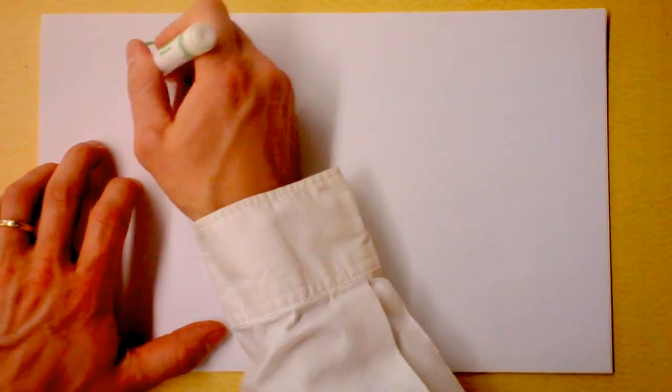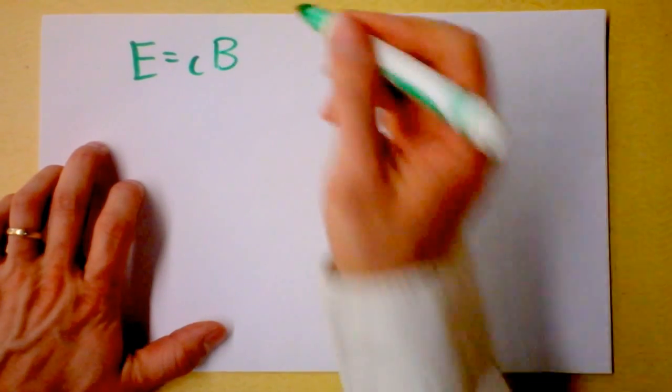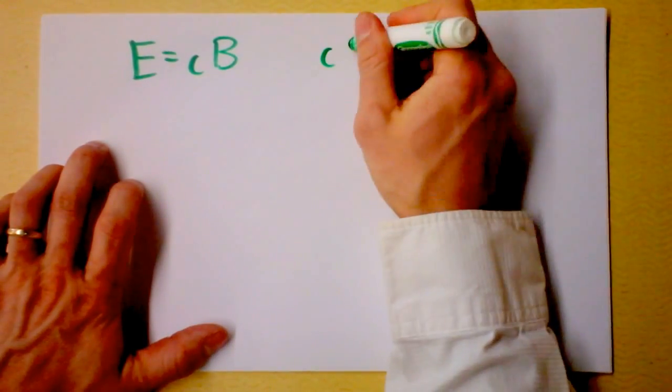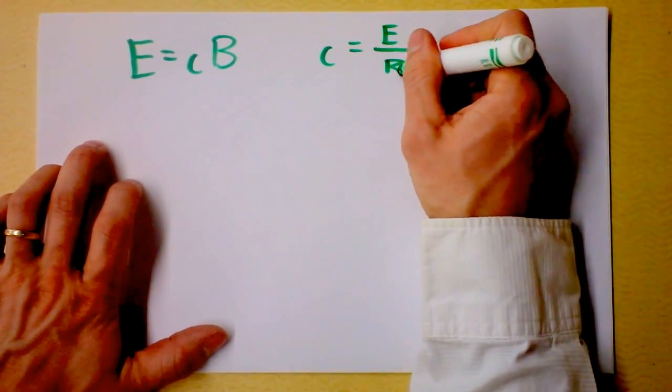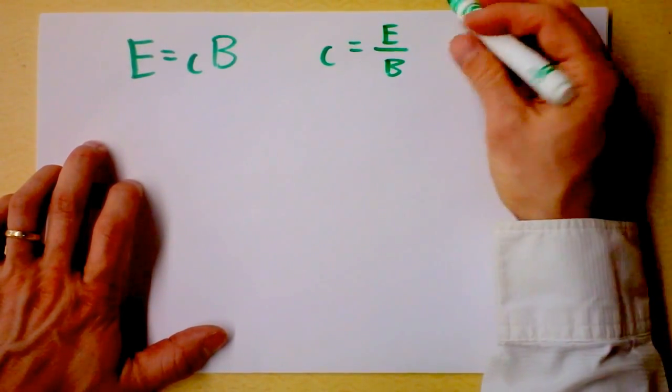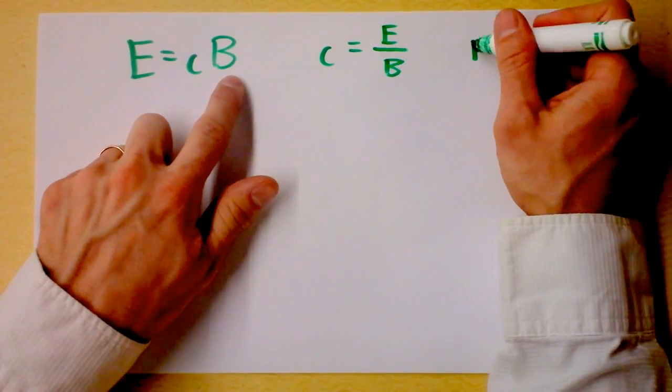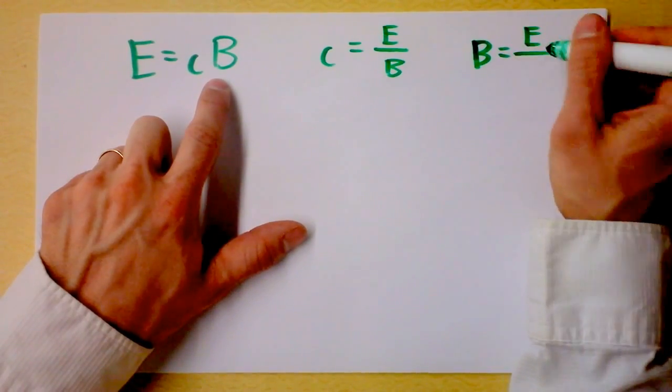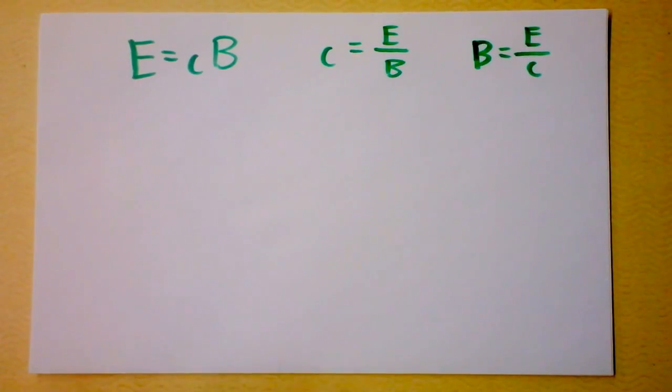Didn't we just finish saying that the electric field in a light wave is the speed of light times the magnetic field? That means we could define the speed of light like this: not only as the electric field divided by the magnetic field, but it also seems to indicate that the electric field is really big compared to the magnetic field. In particular, the magnetic field is the electric field divided by the speed of light, which is a relatively enormous number.